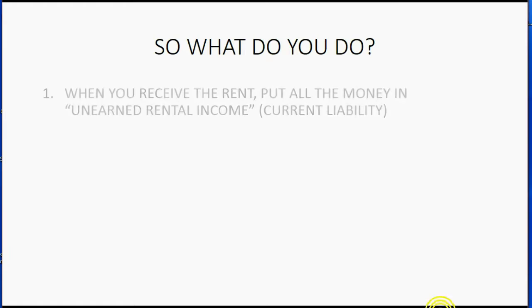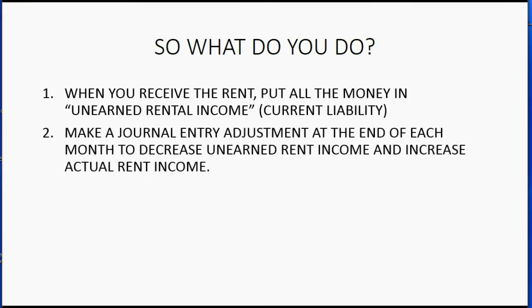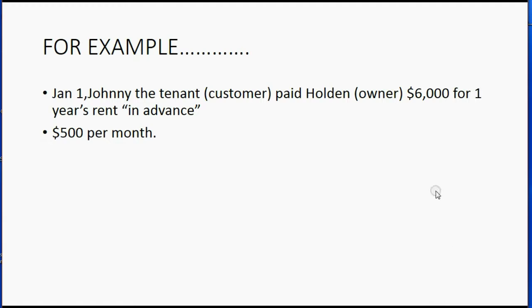So what do you do? First, when you receive the rent, you put all the money into unearned rental income, which is a current liability. Then, at the end of each month, make a journal entry adjustment to decrease unearned rent by the amount of monthly rent and increase the actual rent income. In our example, on January 1 we record receiving unearned rent at $6,000, and cash goes up because Johnny paid us. Then at the end of January, we adjust unearned rent down by $500 and put that $500 into actual rental income.